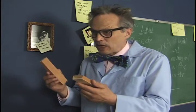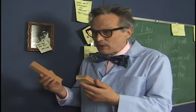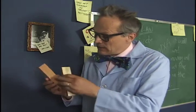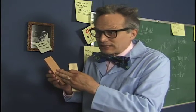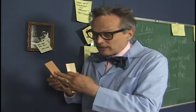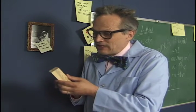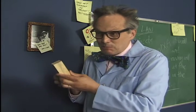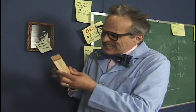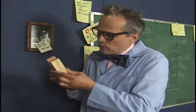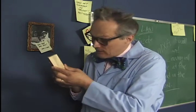Here are two sanding blocks, little blocks of wood with sandpaper attached to them. The sandpaper has lots of little nubs and bumps on them. So when we put the blocks together, the little nubs and bumps stick together and it's hard to move them. There's lots of friction.